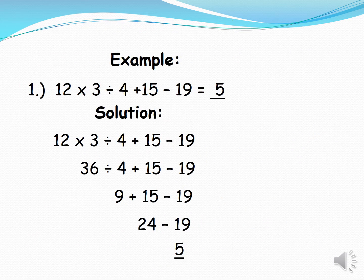Example 1: 12×3÷4+15−19=5. Solution: 12×3=36, then 36÷4=9, then 9+15=24, then 24−19=5.